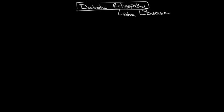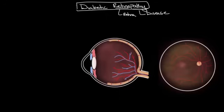To describe what the retina is, let's bring in a diagram of the eye and go through some of the structures, as it will help us as we learn more about this condition. Over here on the left, we have a cross-section of the eye, and there are a few important structures to note. This is the front of the eye, and this is the back of the eye. This part right here is known as the cornea.